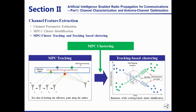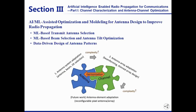By combining the tracking and clustering, a new solution is proposed which is trajectory joint clustering. It tracks MPCs first and identifies the clusters based on the trajectories. In this case, the clustering and tracking process can make up for each other, which results in fairly good tracking and clustering accuracy.